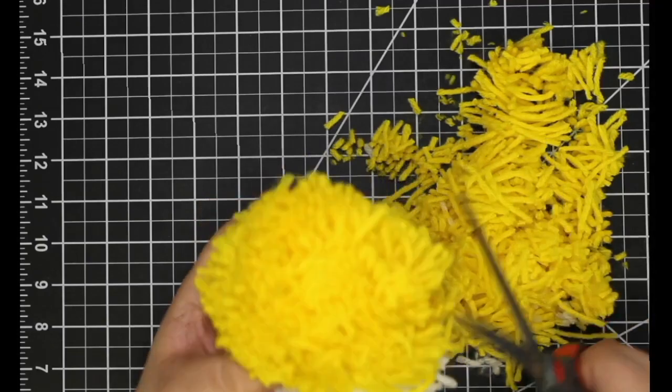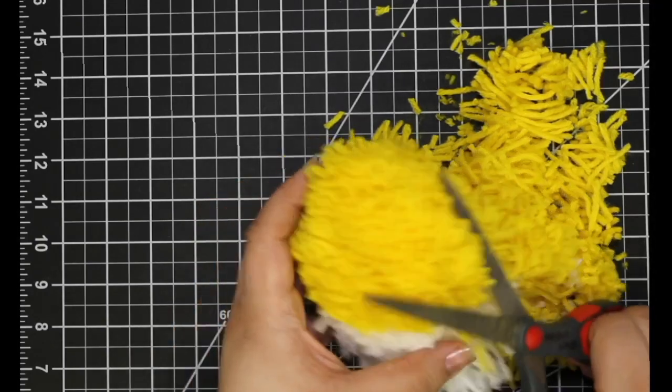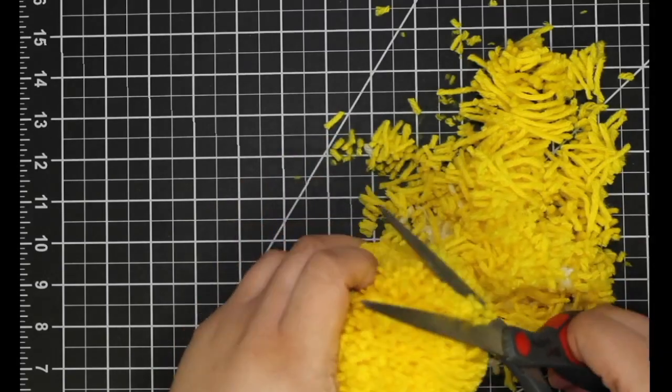Simply cut off the majority of the yarn until you start to reach the center where the yarn is more compact. This is where you will begin to shape your chick.